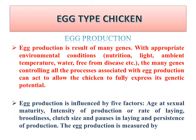Egg production is the result of many genes with appropriate environmental conditions such as nutrition, light, ambient temperature, water, and freedom from diseases. The many genes controlling the processes associated with egg production allow the chicken to express its genetic potential — meaning not only genetically superior birds, but you also need to provide proper nutrition, light, housing, and water for higher egg production.